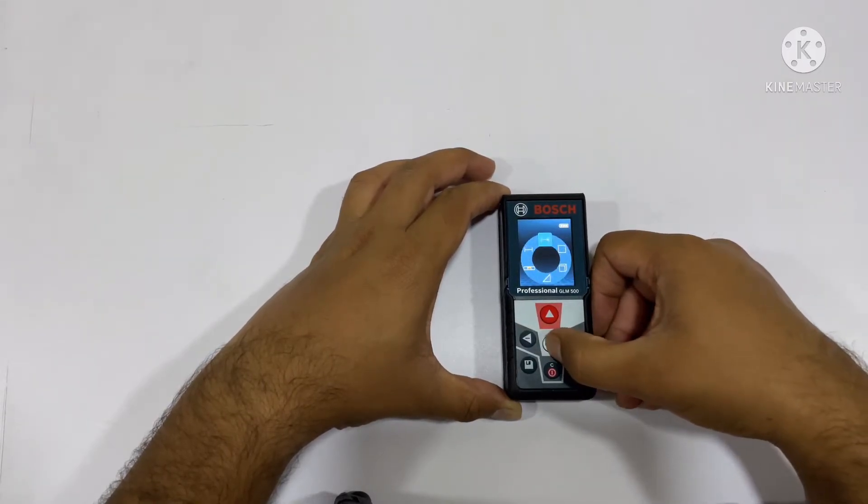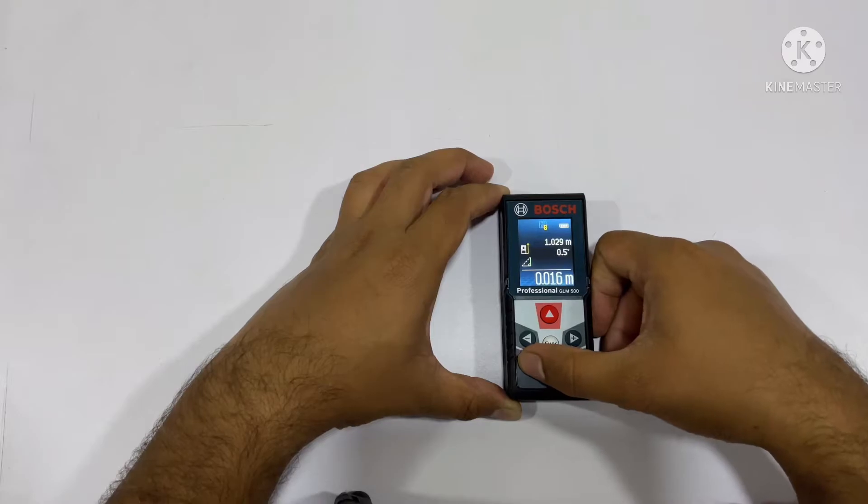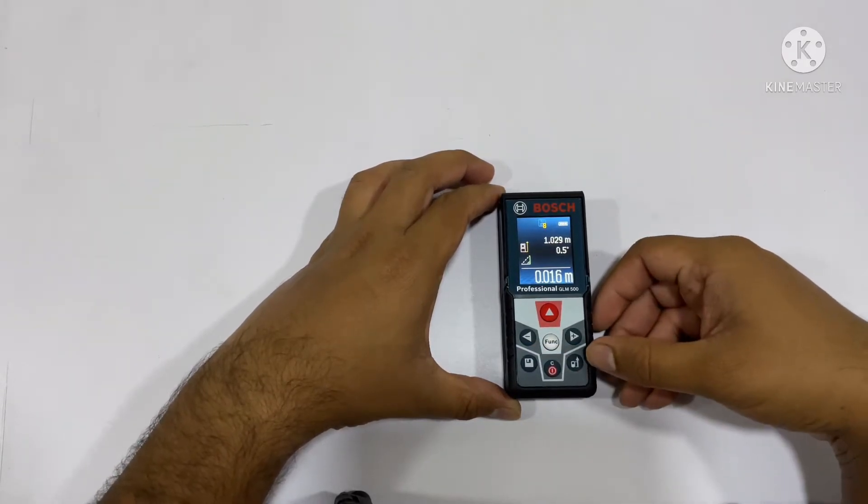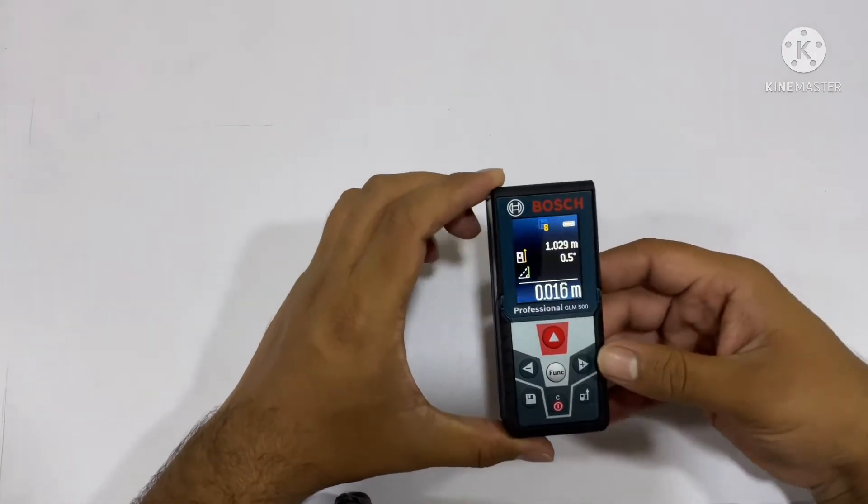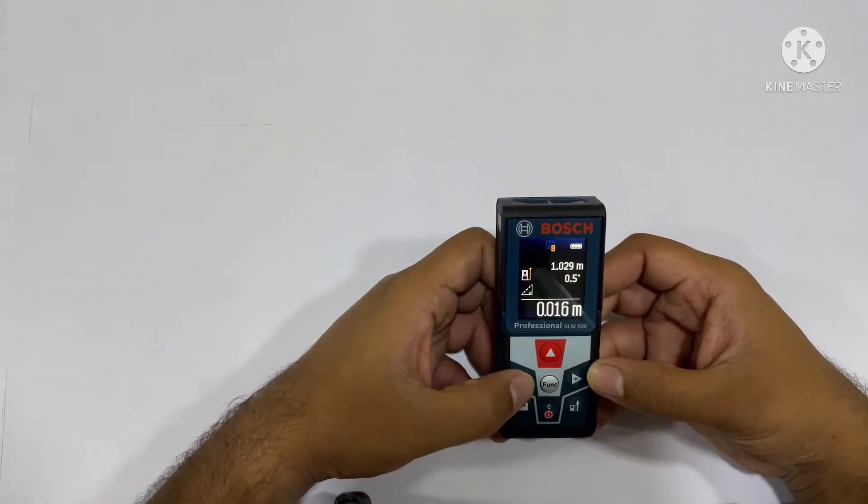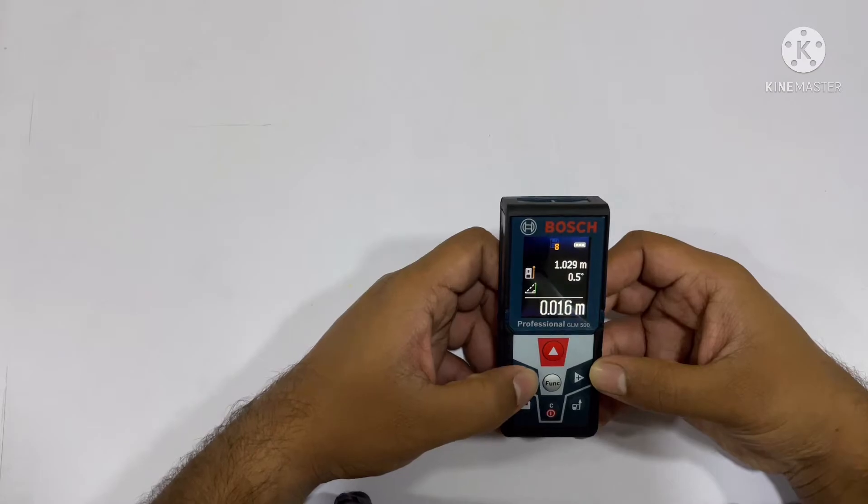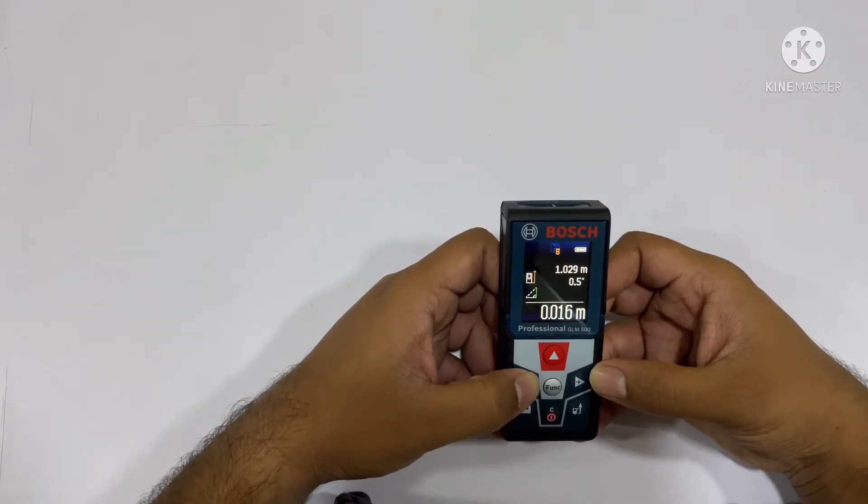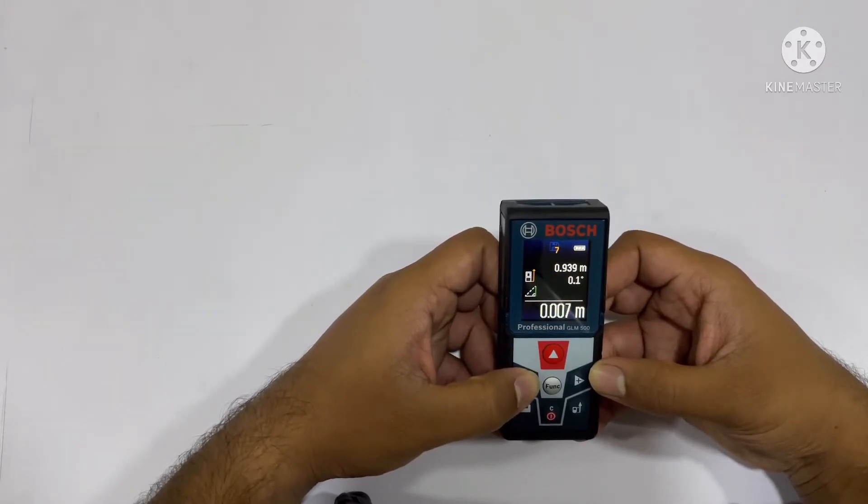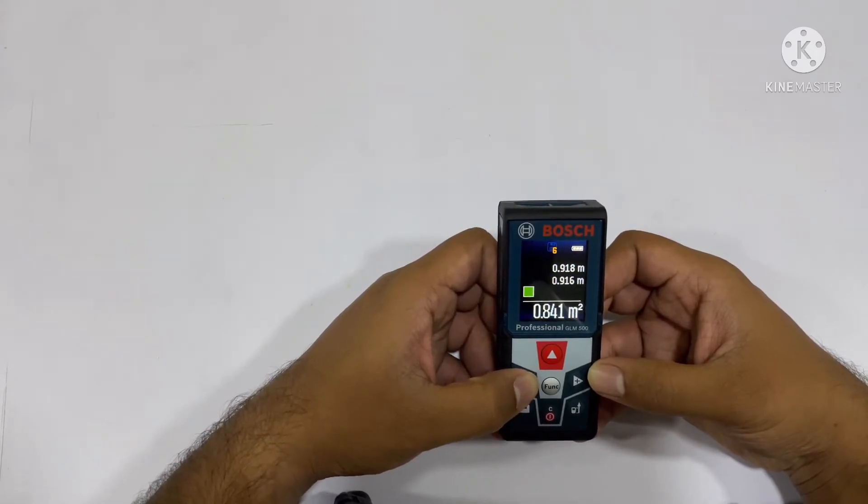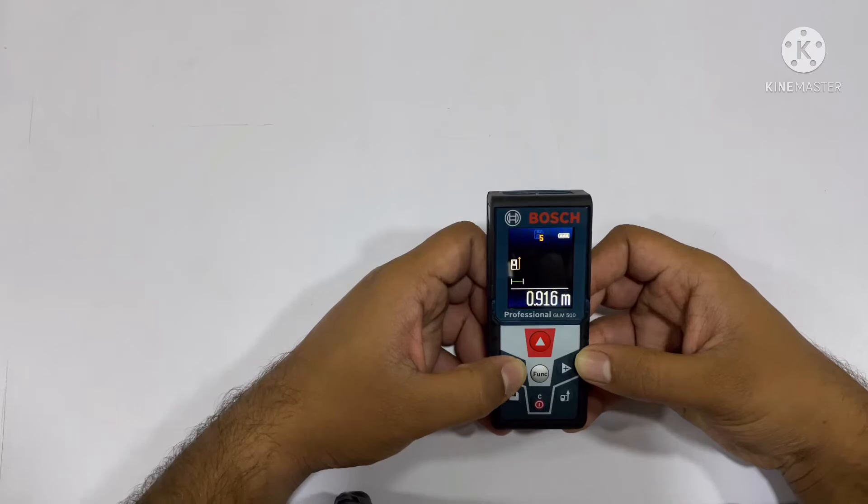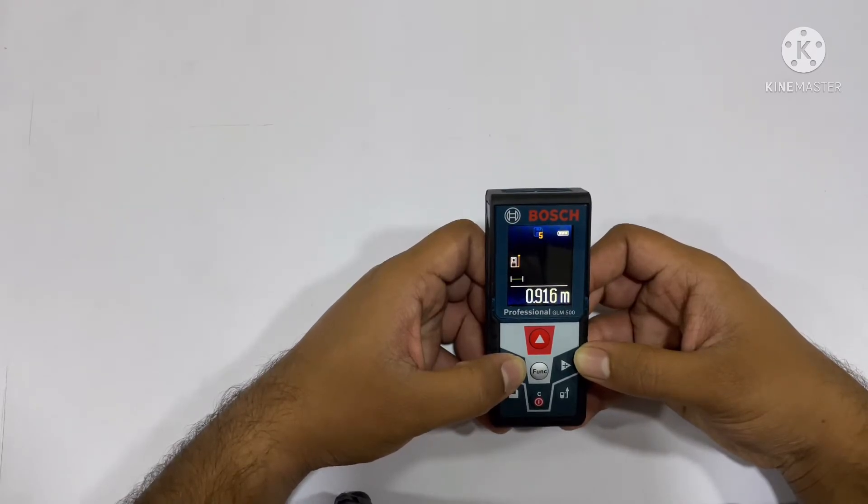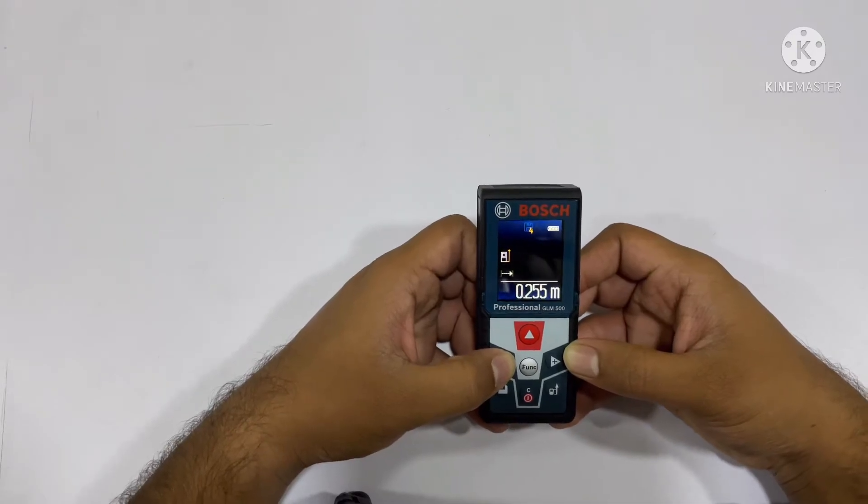If you want to recall the measurement that you have done, you can click on the save button. Whatever the record available in this device will start showing. On the eighth record we have the angle, on seventh record we also have another angle, this was the area calculated, this was the distance between two points, the same distance.